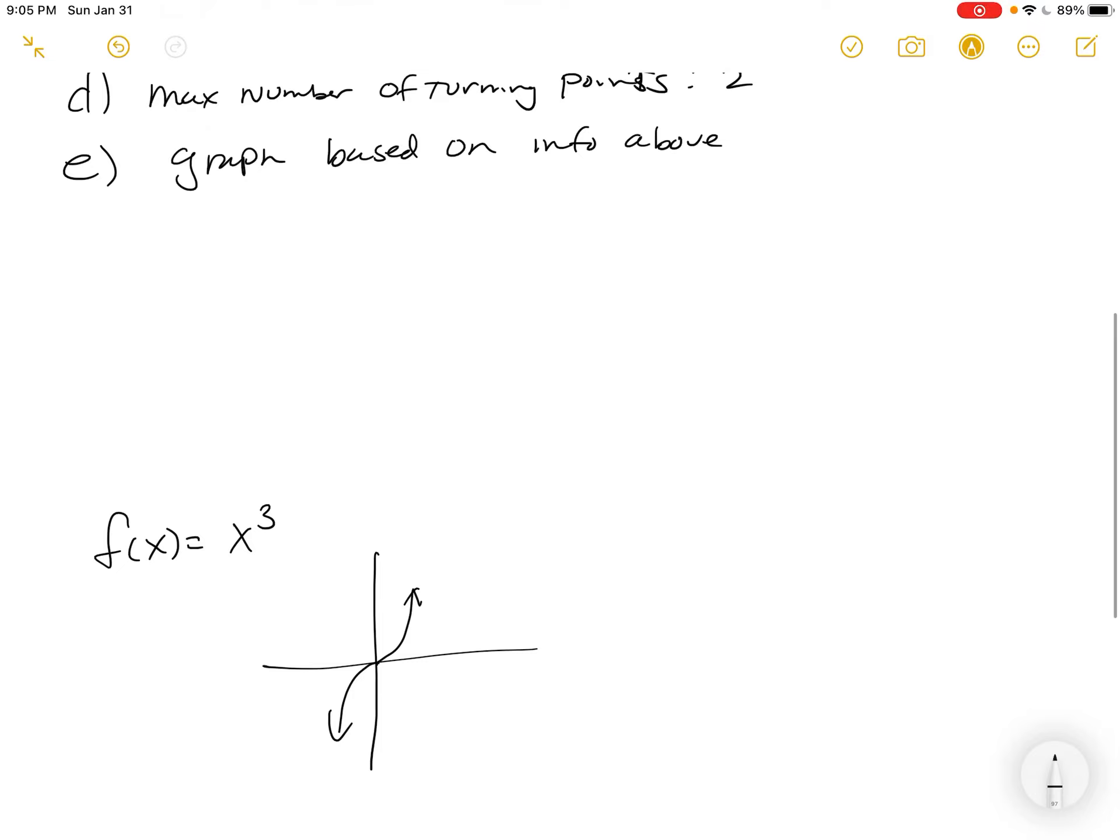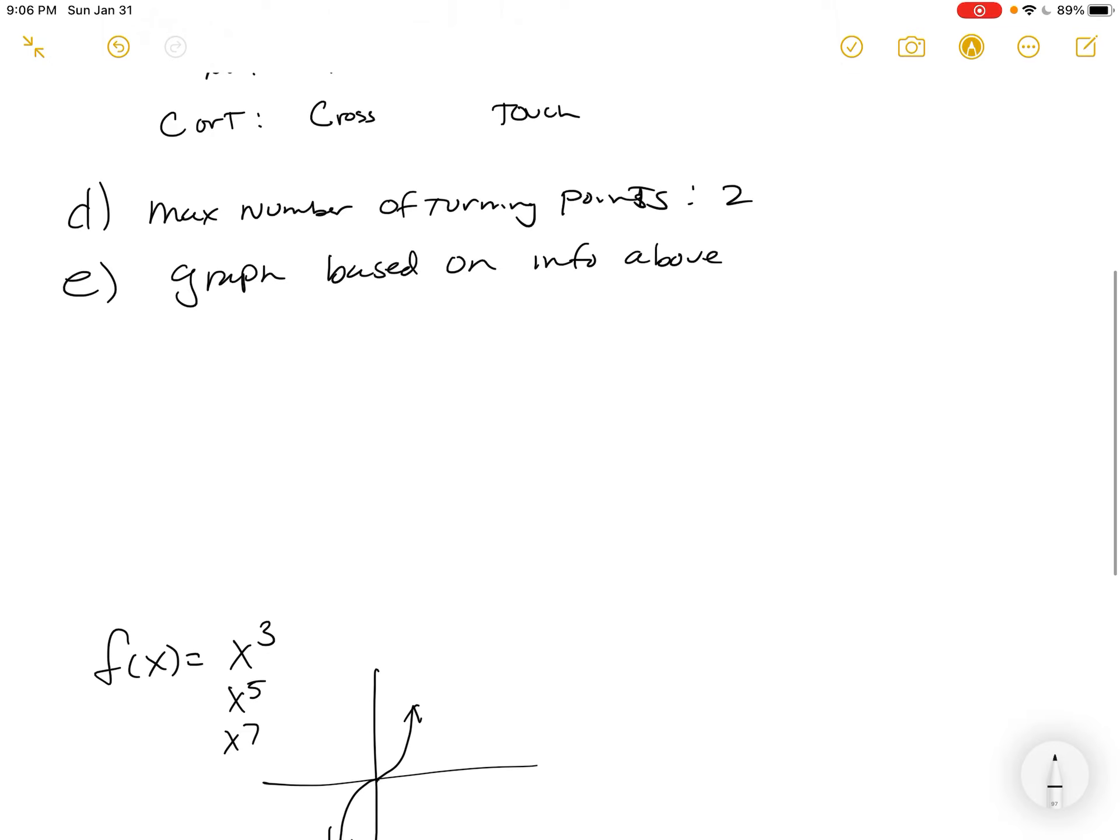This is actually what x cubed looks like, x fifth looks like, x seventh. I mean, you would be able to not tell very much difference if they're graphed independently, except that with the fifth and the seventh, it hugs the x-axis a little bit more before one and then shoots up after one, like really quickly.